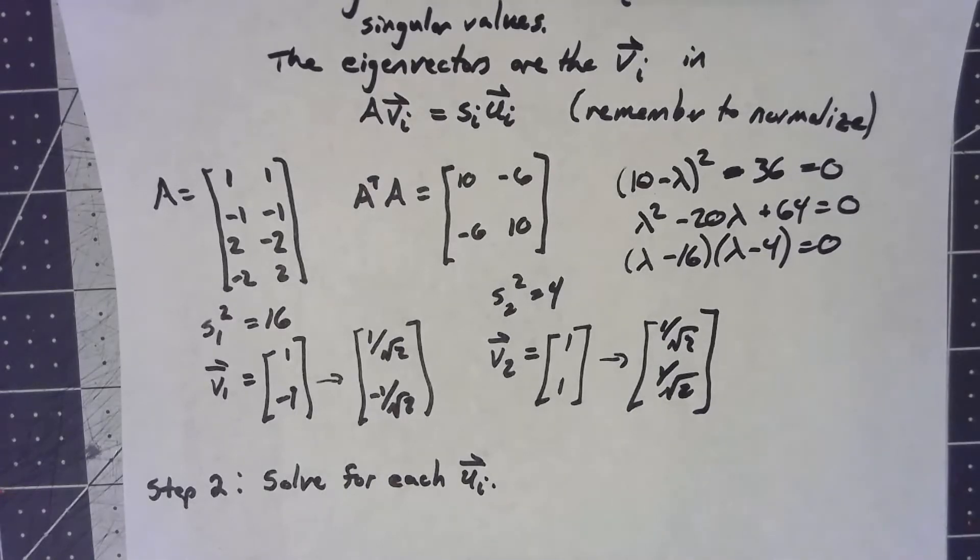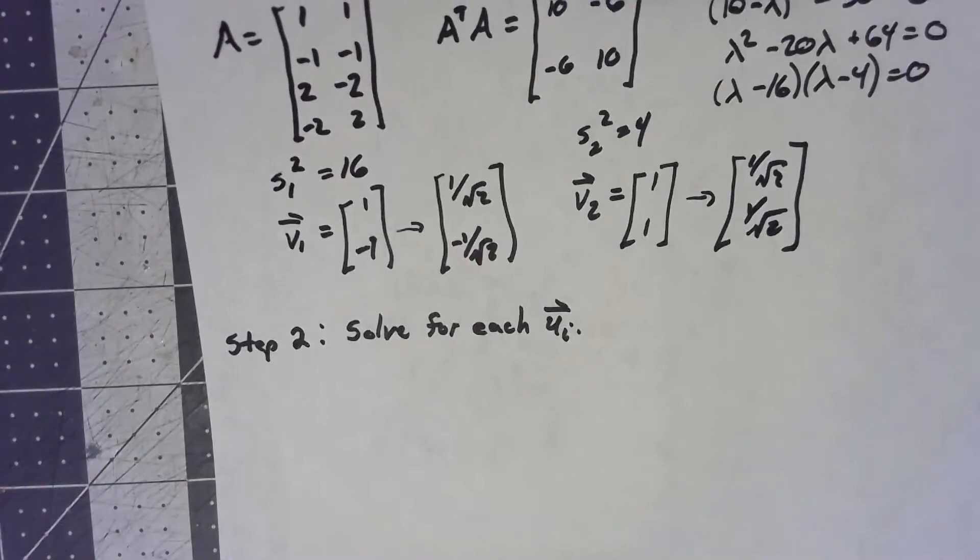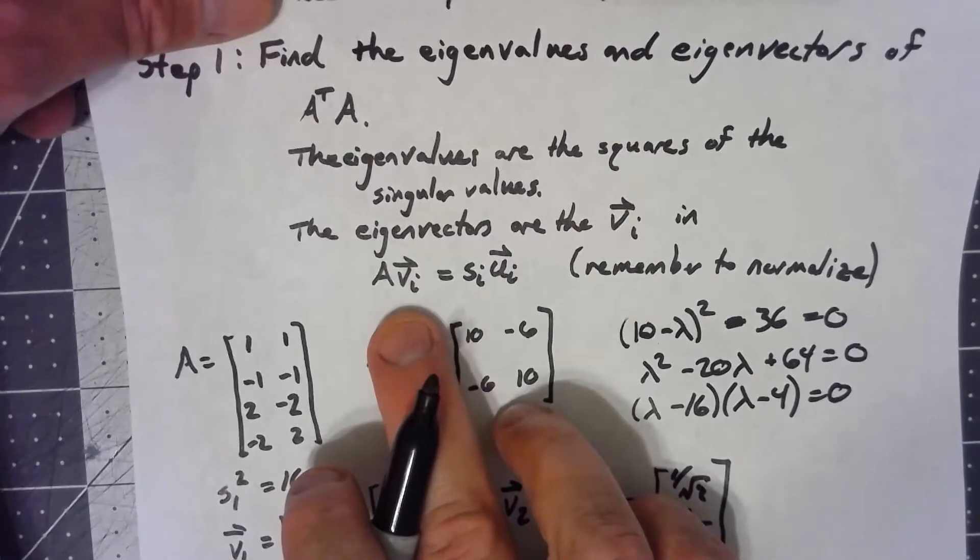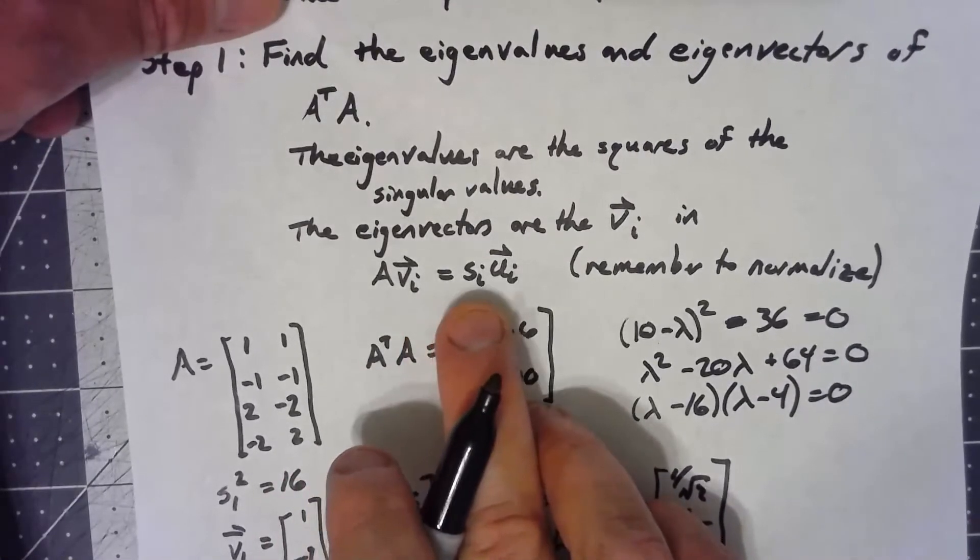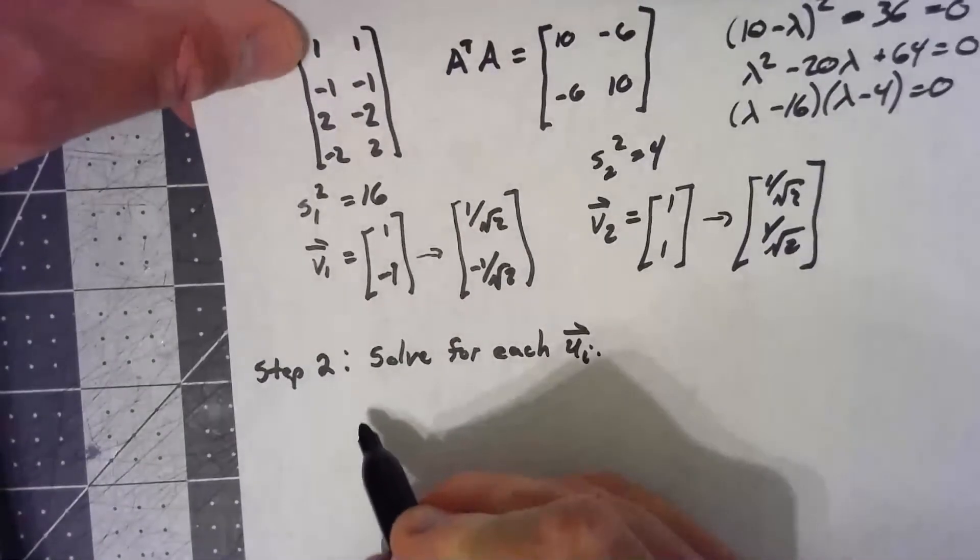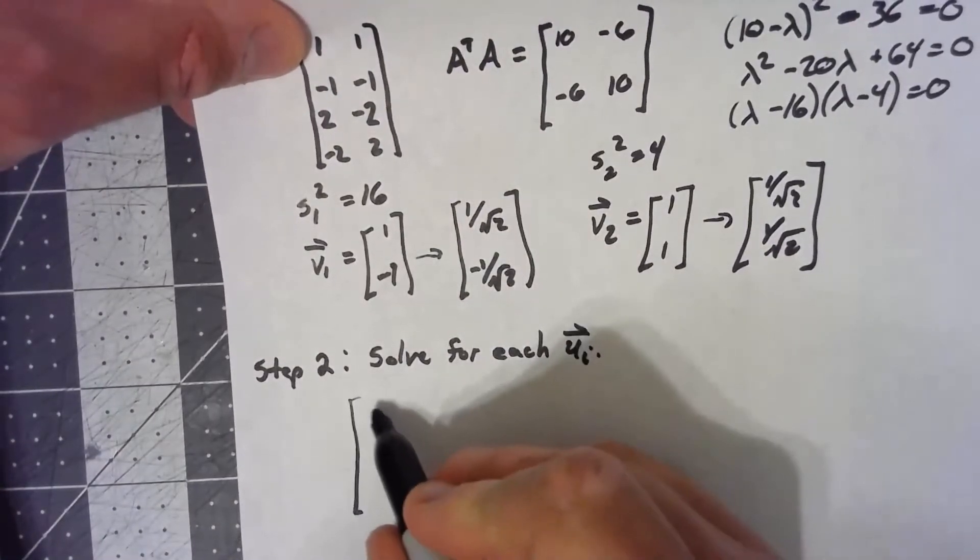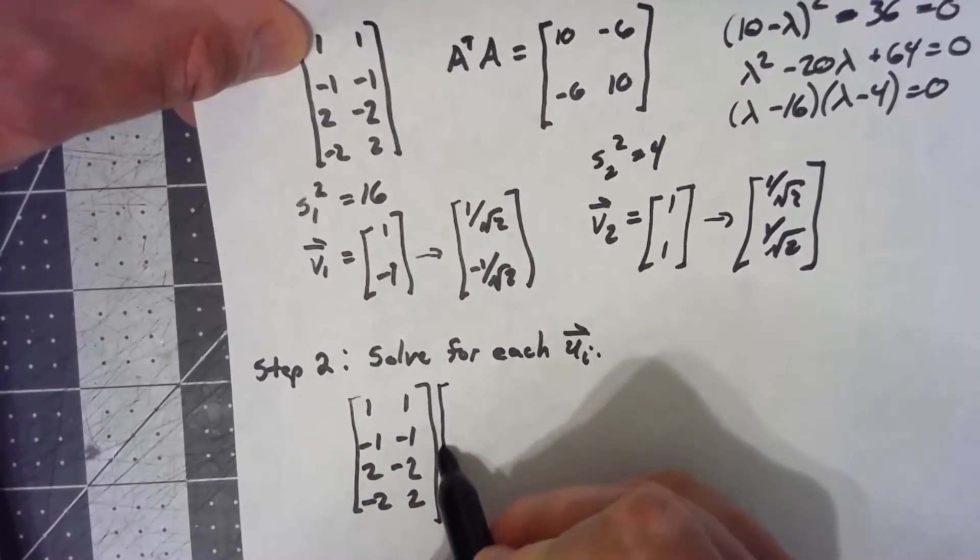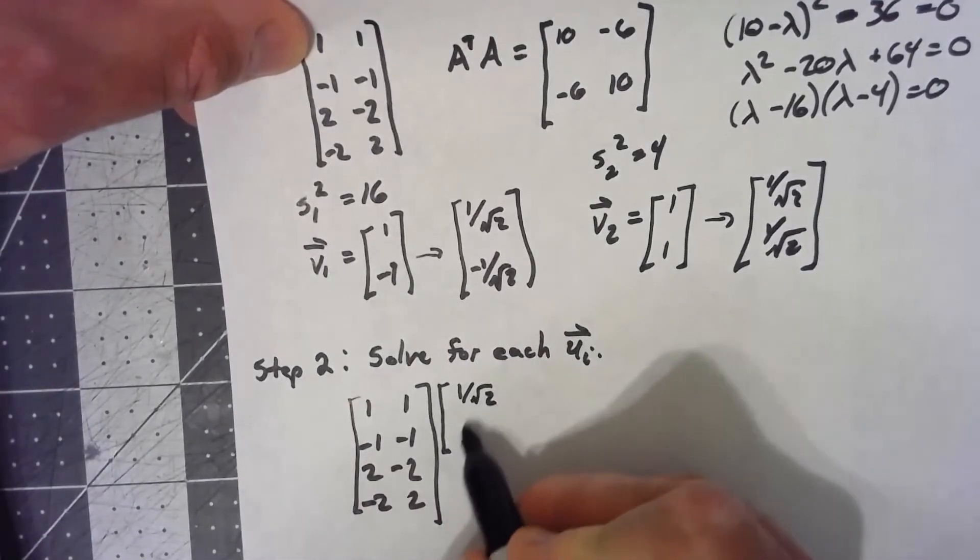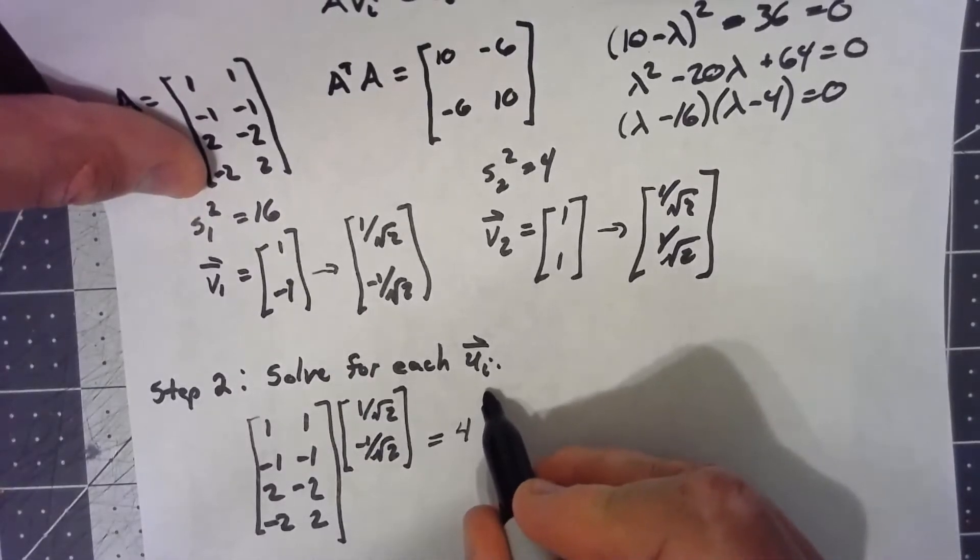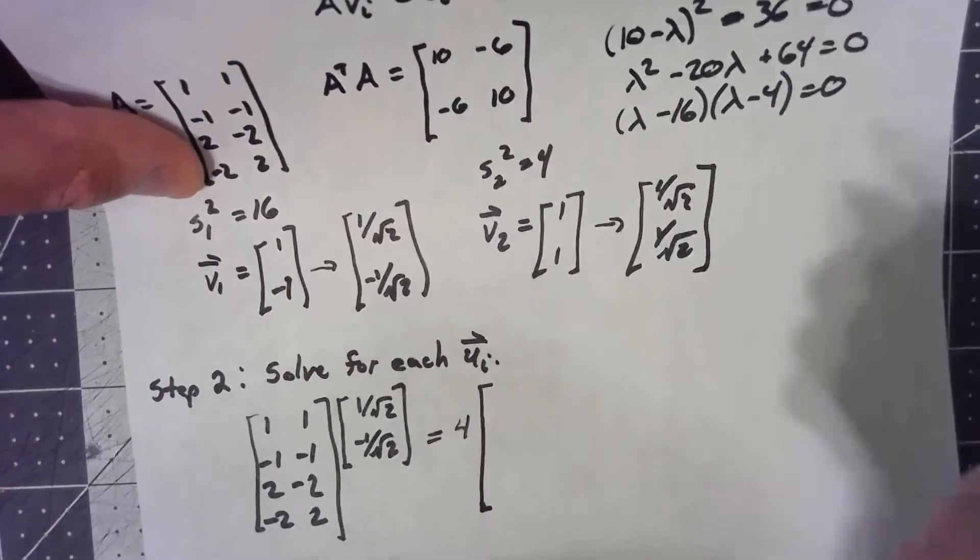To some extent, we've got half of it now, although we've done more than half of the work involved in this. The next thing is we need to figure out what are the u's. Because again, going back to my general equation, my singular values and singular vectors are such that A vi is equal to my singular values times my ui's. So, what that means is my matrix A, my 1, 1, negative 1, negative 1, 2, negative 2, 2, times my v1, my 1 over root 2, negative 1 over root 2, has to equal my singular value 4 times my u1.